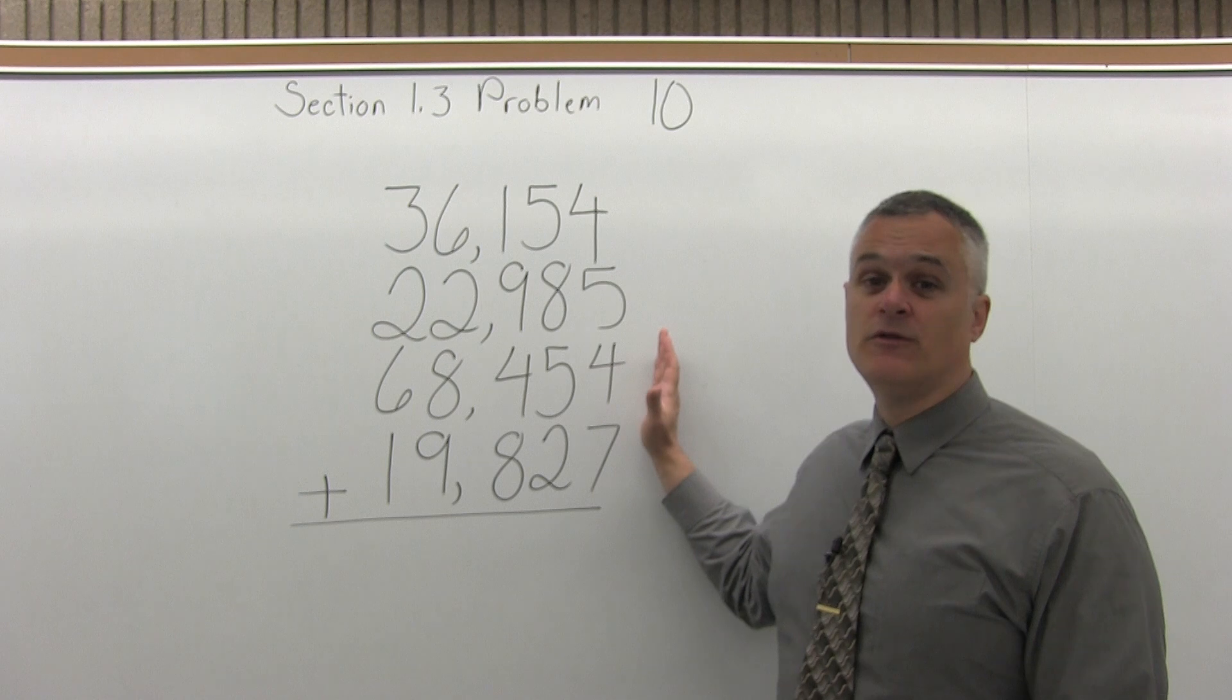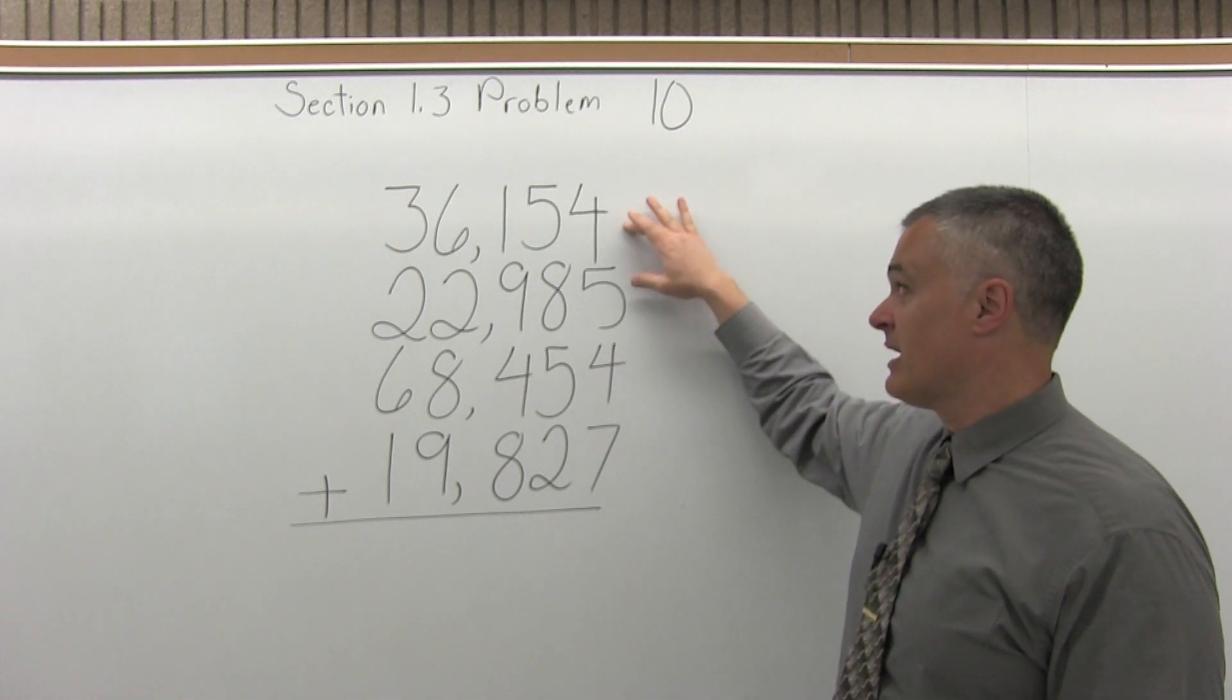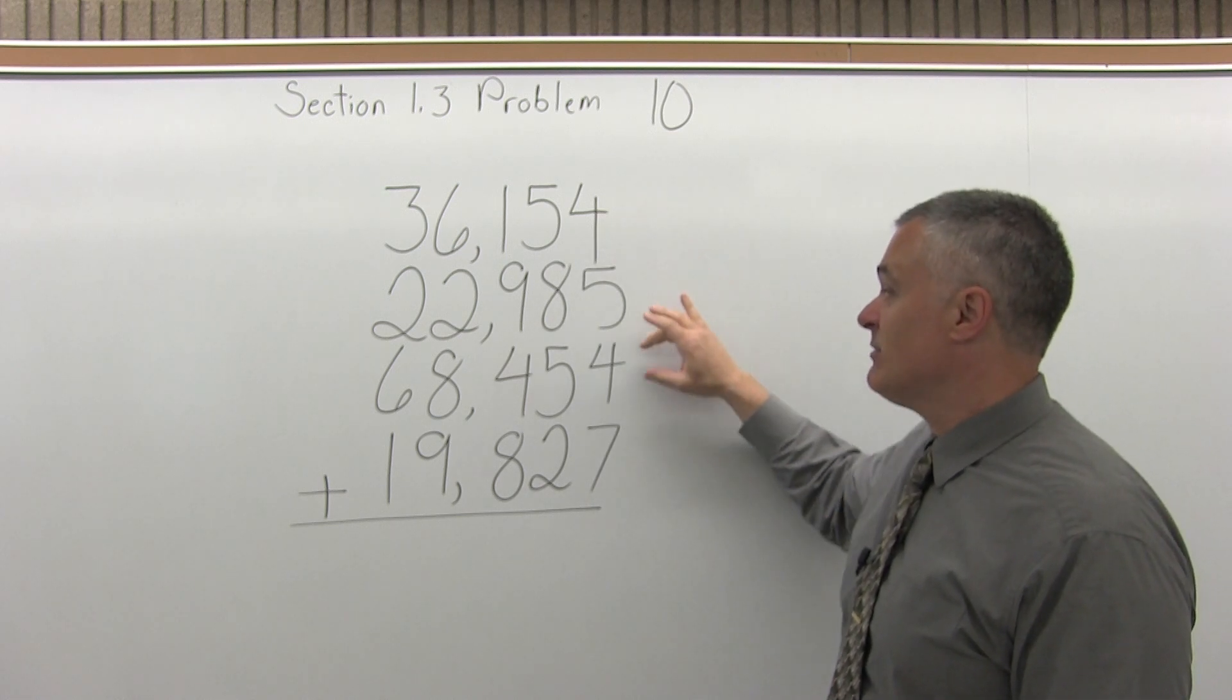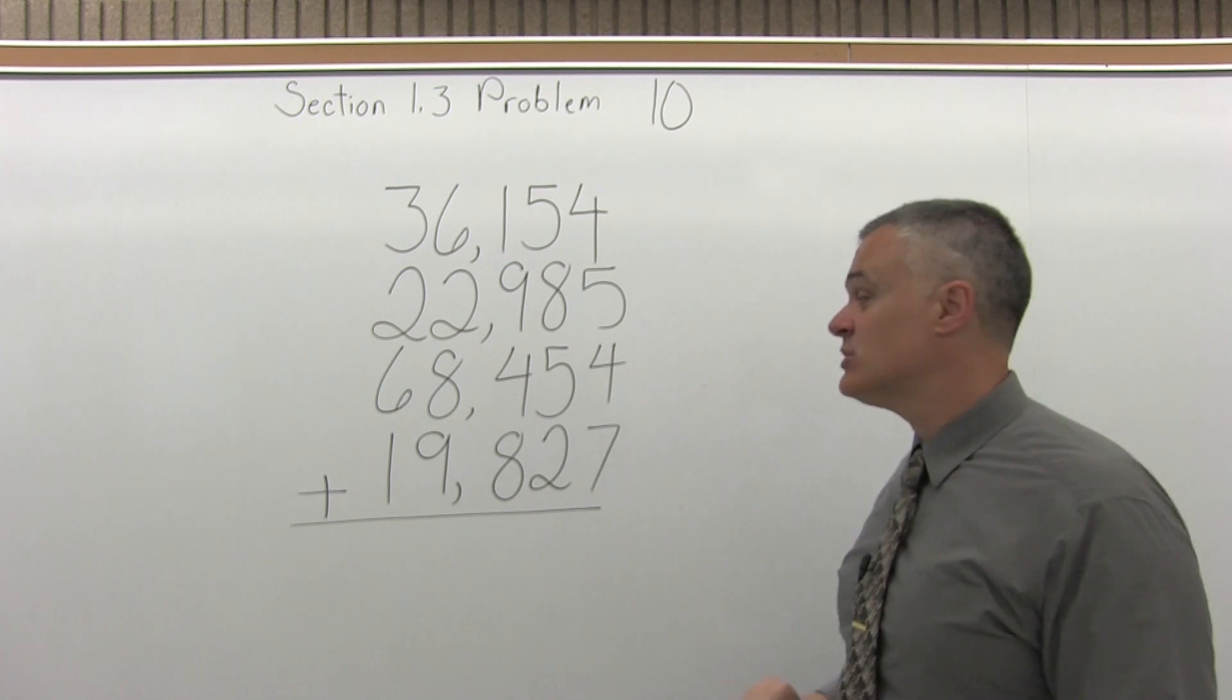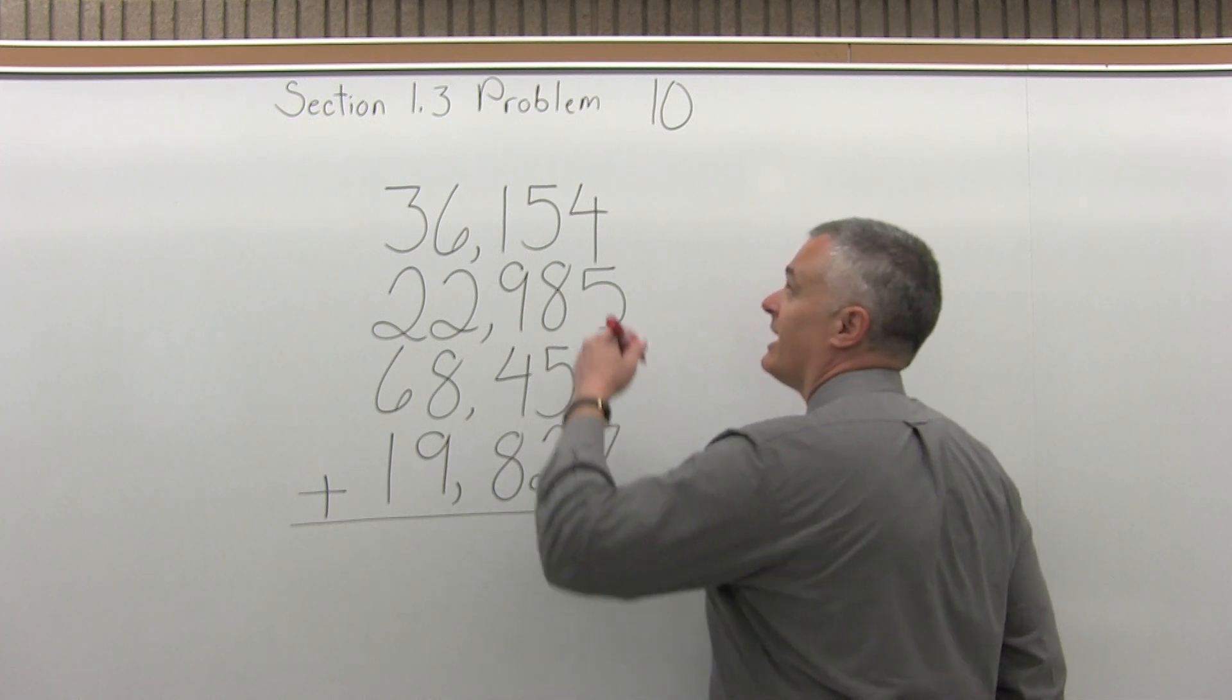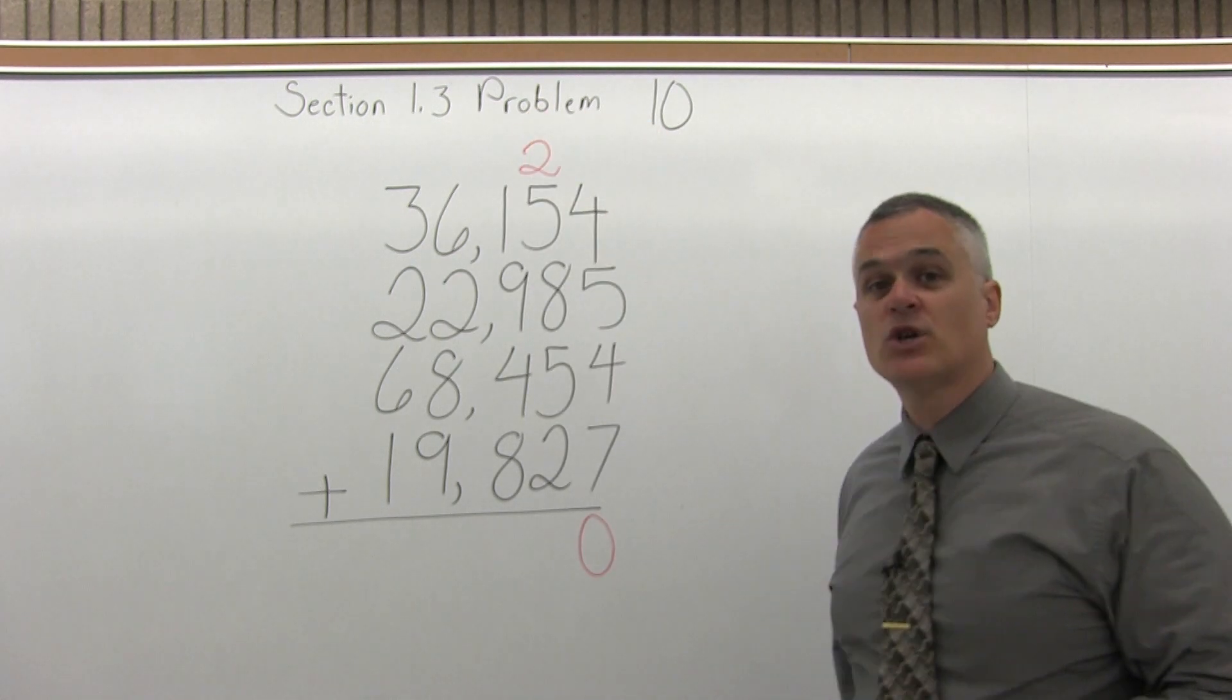I will start from the far right column of digits and add those digits together. So I will start by adding 4 plus 5 plus 4 plus 7. So 4 plus 5 is 9, 9 plus 4 is 13, 13 plus 7 is 20. So for 20, I'll put the 0 from the 20 under the column of digits that I just added, carry the 2 from the 20 to the top of the next column of digits.